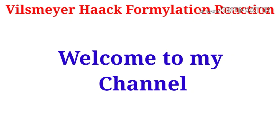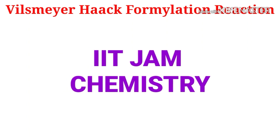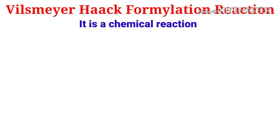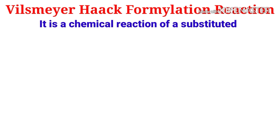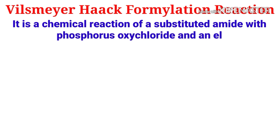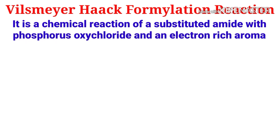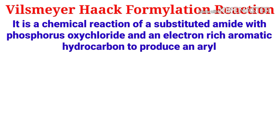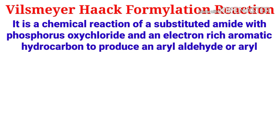Today I am going to discuss a very important name reaction based on formylation — the Vilsmeier-Haack reaction. The Vilsmeier-Haack reaction is the chemical reaction of a substituted amide with phosphorus oxychloride and an electron-rich aromatic hydrocarbon to produce an aryl aldehyde or aryl ketone.